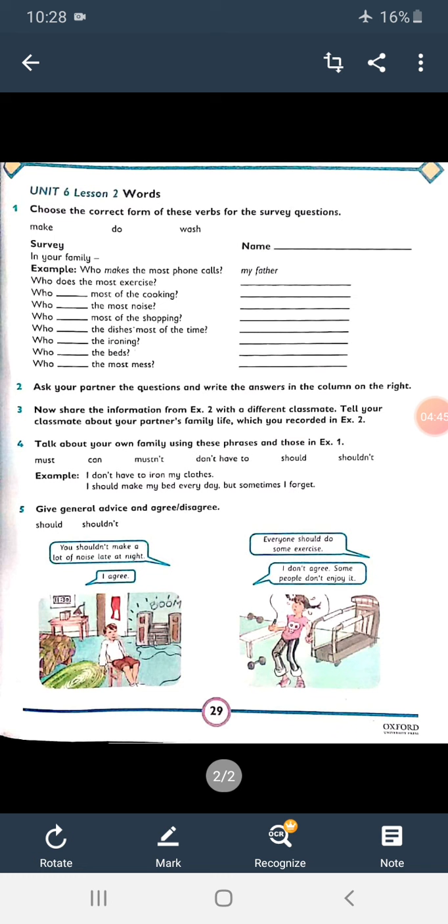Now, come to page number 29. Unit six, lesson number two: Words. Words means alphaz. Choose the correct form of these words for the survey questions. Here, we have a survey given to your family. You will fill it. Name, you will enter your name.